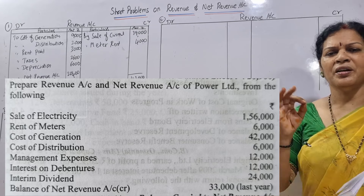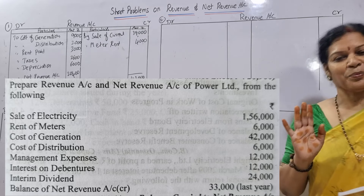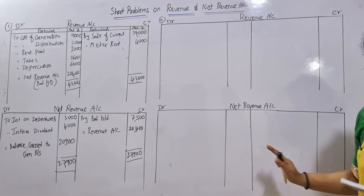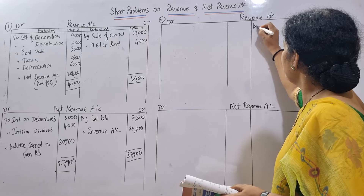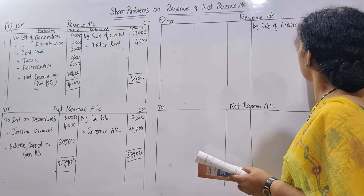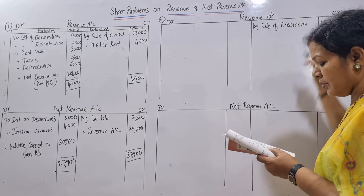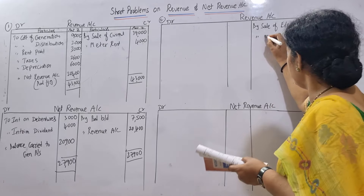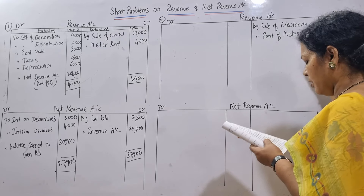Same as the previous problem. Now revenue account: sale of electricity is income, credit side - by sale of electricity, 1,06,000. Rent of meters is also income - rent of meters, 6,000. Cost of generation is expenses, debit side - cost of generation 42,000. Cost of distribution, also expenses - 6,000. Management expenses - 12,000.